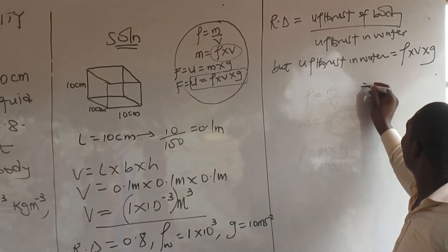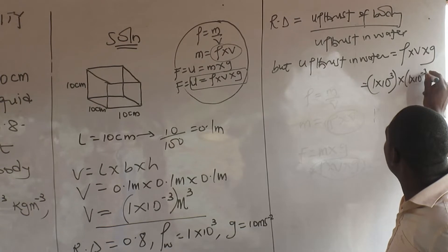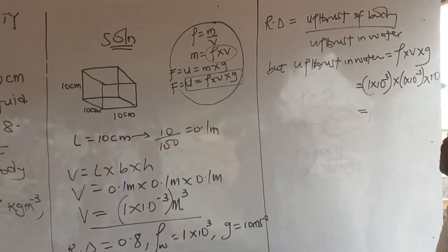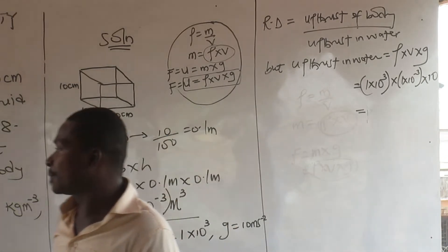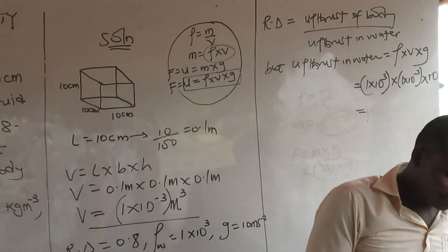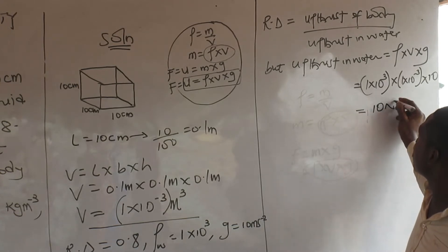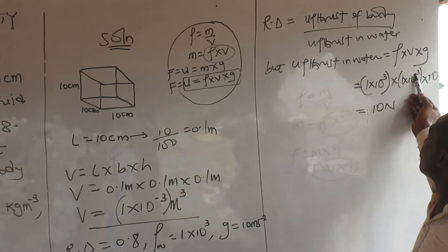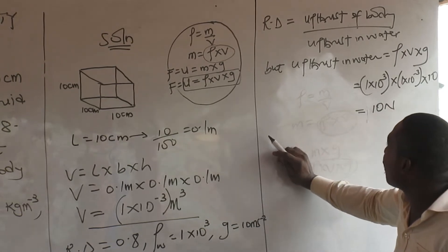So I have density 1×10³, volume 1×10⁻³, and gravity equals 10. When you multiply 1×10³ by 1×10⁻³ by 10, the powers cancel — 10³ and 10⁻³ give 10⁰, then multiply by 10 — and we get 10 newtons. So the upthrust in water is 10 newtons.